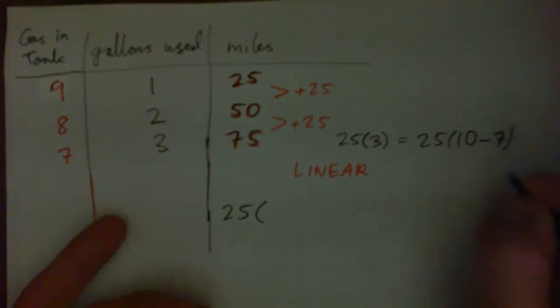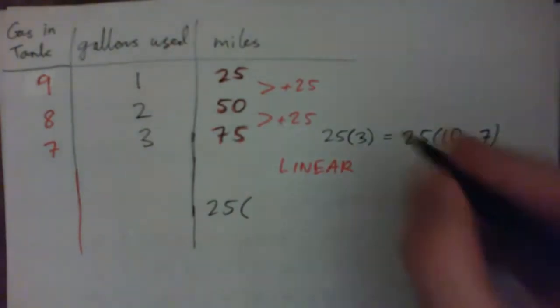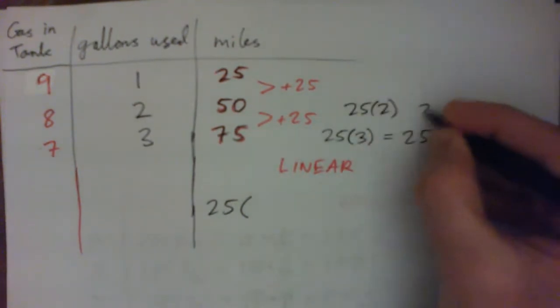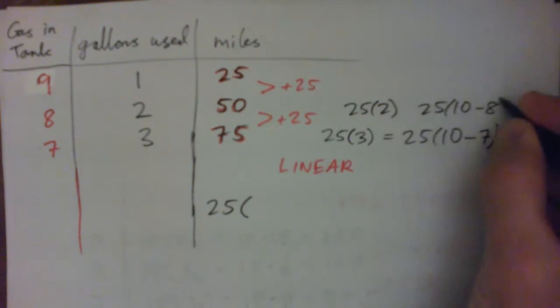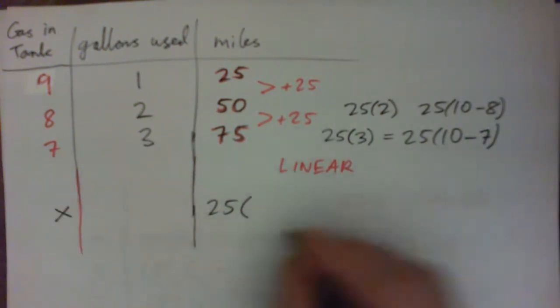This is for 50, it's like 25 times 2, or 25 times 10 minus 8, and so on, right? So if we've x gallons left in the tank, it's 25 times 10 minus x.